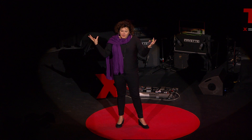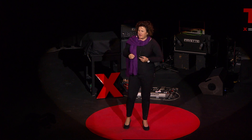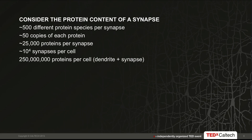For the last 20 years, neuroscientists have been characterizing the proteins that inhabit synapses. Most people would agree that on average there are 500 different kinds of proteins really resident at the synapse, and for each one of those proteins, on average there are about 50 copies. So that gives us 25,000 proteins in a single synapse. And with 10 to the 4 synapses per cell, we have 250 million proteins — and that's just in the dendrites.